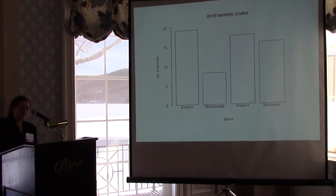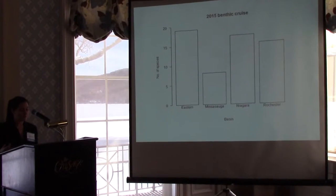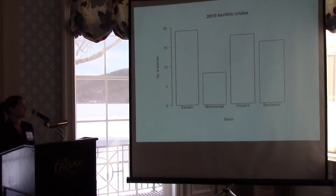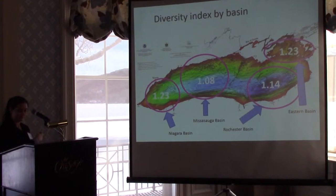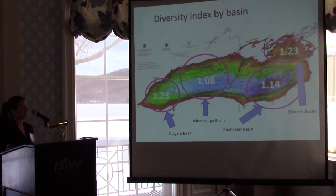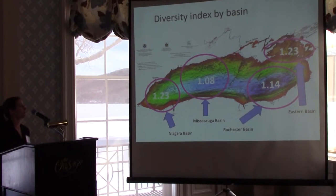Further spatial breakdown of species richness into basins shows that species richness is greatest in the eastern basin, followed by the Niagara — so we've got greater species richness in the furthest west and furthest east basins. The Rochester basin is slightly less, and the Mississauga has the least species richness. Looking at species diversity, the Niagara and eastern basins have the highest species diversity but very different bathymetric profiles. The eastern basin is primarily shallow, while the Niagara basin has a deeper depth profile. The Rochester basin is the deepest but has lower species diversity, and Mississauga has the lowest at 1.08. There are no obvious trends related to depth.